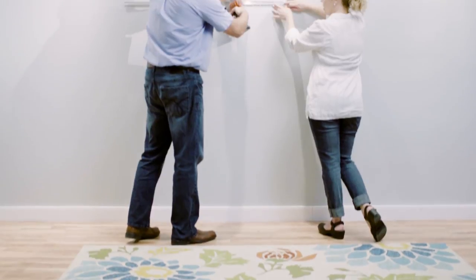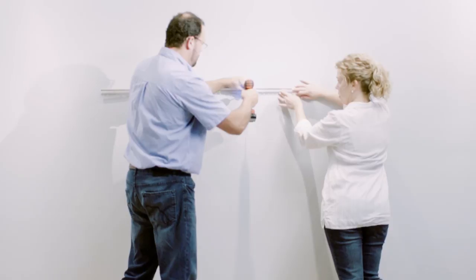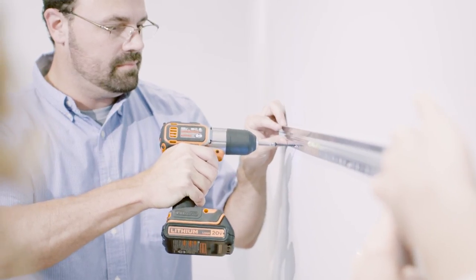Using the enclosed three-inch wood screws, firmly attach the cleat to the wall. Three-inch masonry screws are also included if you're mounting to brick.